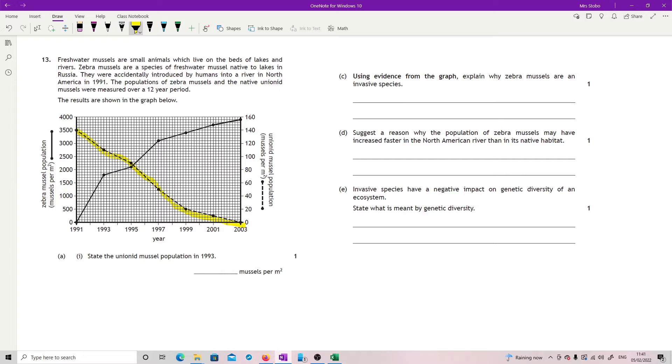Suggest a reason why the population of zebra mussels may have increased faster than its native habitat. So you've removed it to somewhere better for it, basically, because we now have no predators, less competition, we probably have less disease, less parasites. All the things that normally keep a general population within its carrying capacity and slowing it. We don't have that. Okay, any one of those.